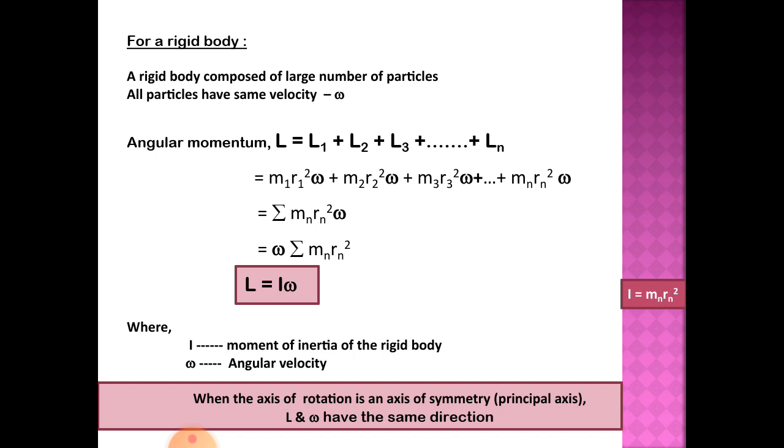Then when you consider the whole body, it consists of large number of particles. All the particles have same velocity. Then the total momentum of this body L is equal to L1 plus L2 plus L3 plus up to Ln.